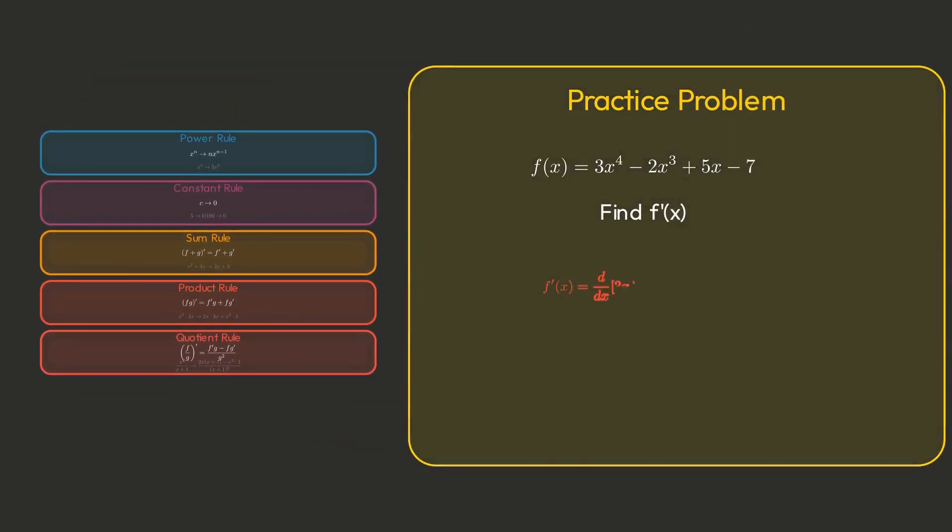Let's practice. What's the derivative of f of x equals 3x to the fourth minus 2x cubed plus 5x minus 7? Using our rules, f prime of x equals 12x cubed minus 6x squared plus 5.